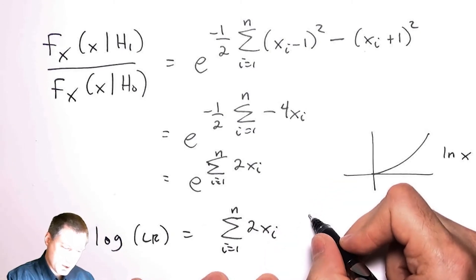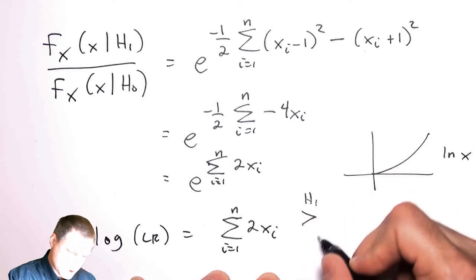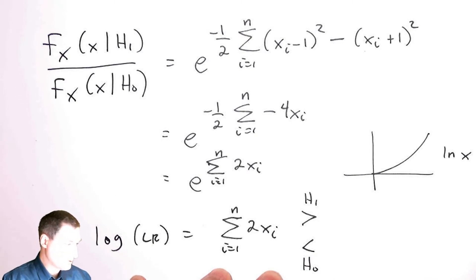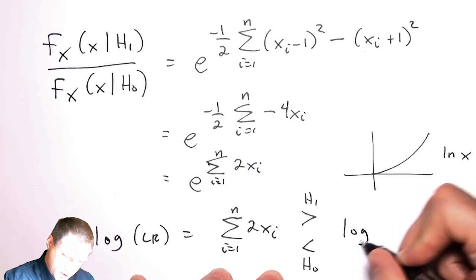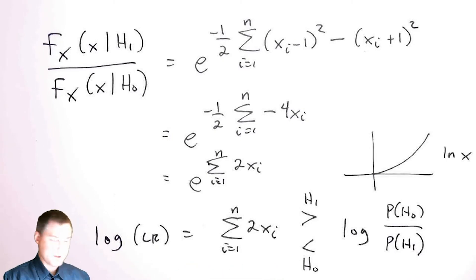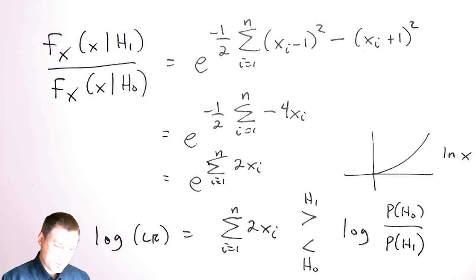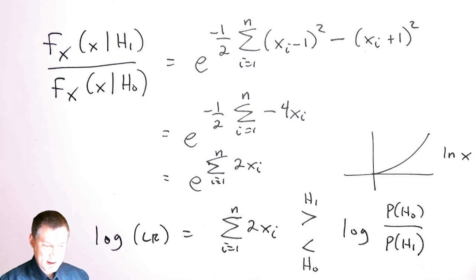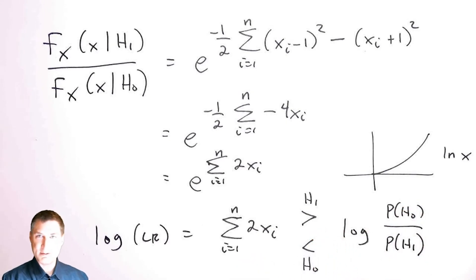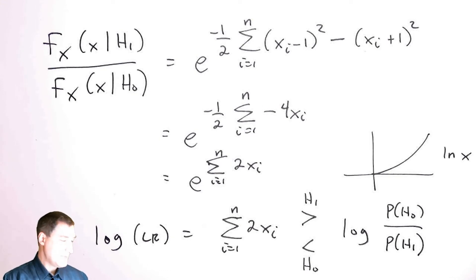The decision rule says: choose H1 if the log likelihood ratio is above some threshold, and H0 if it's below. The threshold is the log of the ratio of the priors. If the priors are equal — p(H0) = p(H1) = 0.5 — then log of one is zero, so the threshold is zero. That means: if the sum of the observed numbers is positive, choose the plus-one case; if negative, choose the minus-one case. That actually makes a lot of intuitive sense.